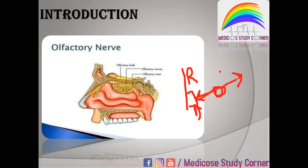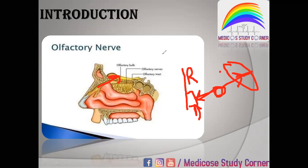These two processes — the central process passes through the cribriform plate. The cribriform plate is a structure of the skull interior that has small pores. The fibers pass through and it is then called the olfactory nerve. These are just fibers which are unmyelinated. They pass through the cribriform plate and then it is called the olfactory nerve.